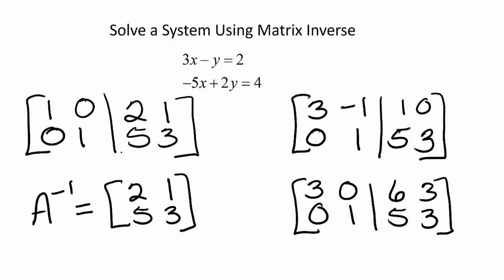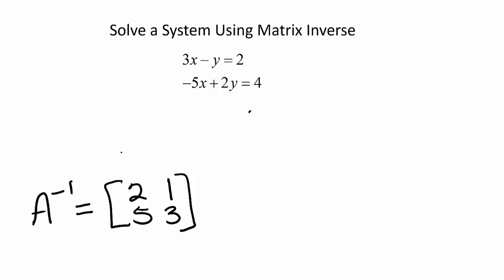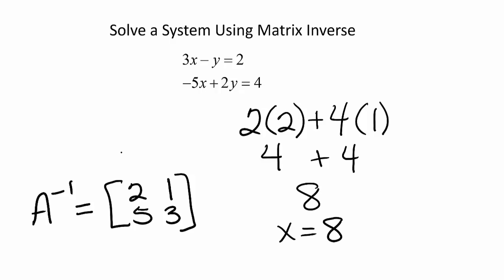The constants in our original system are 2 and 4. To find the x value of the solution, we will multiply the first row of the inverse matrix by the constants. So we have 2 times 2 plus 4 times 1. That's 4 plus 4 equals 8. x equals 8.